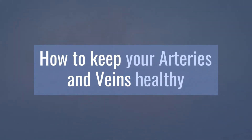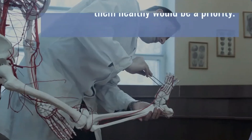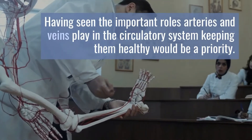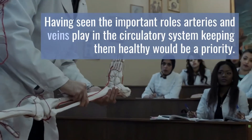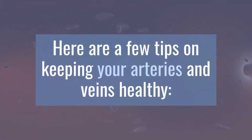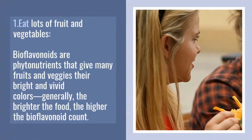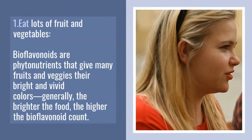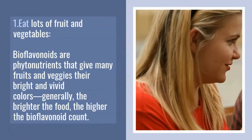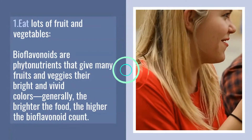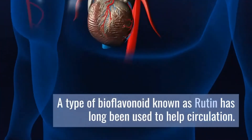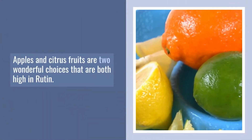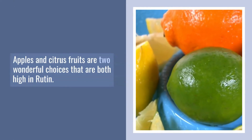Having seen the important roles arteries and veins play in the circulatory system, keeping them healthy would be a priority. Here are a few tips on keeping your arteries and veins healthy. First, eat lots of fruit and vegetables. Bioflavonoids are phytonutrients that give many fruits and veggies their bright and vivid colors — generally, the brighter the food, the higher the bioflavonoid count. A type of bioflavonoid known as rutin has long been used to help circulation, and apples and citrus fruits are two wonderful choices that are both high in rutin.